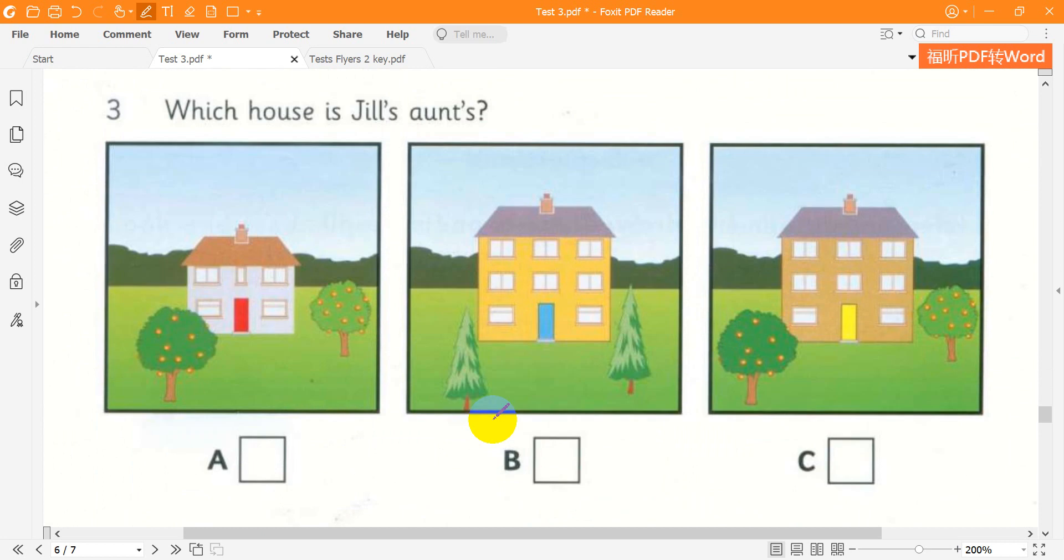Question 3. Which house is Jill's aunt's? What's your aunt's house like? Well, it's very big with three floors.